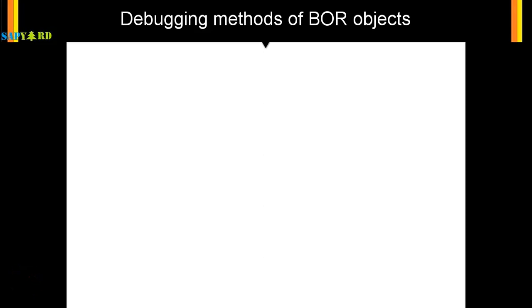The next advanced topic on debugging is debugging the methods of the BOR objects. BOR means Business Object Repository. Usually whenever you work on any workflow, you have to have a BOR object. This topic may be too advanced for a functional person, so if it is too overwhelming for you, you may skip this and go to the next video or the next section. If you feel you want to know how to debug the methods of a BOR object while working on workflow development, then you may continue.